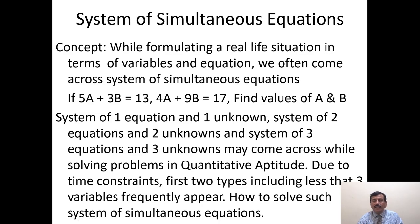By formulating a real-life situation in terms of variables and equations, we often come across systems of simultaneous equations. For example: if 5A + 3B = 13 and 4A + 9B = 17, find the values of A and B. Here the variables are A and B—two variables and two equations.